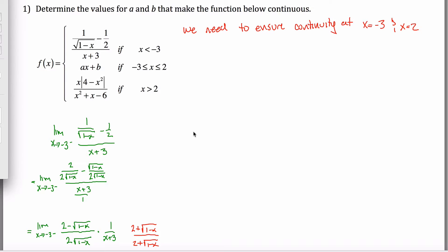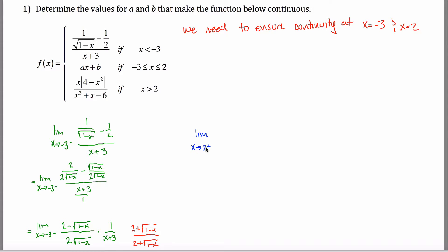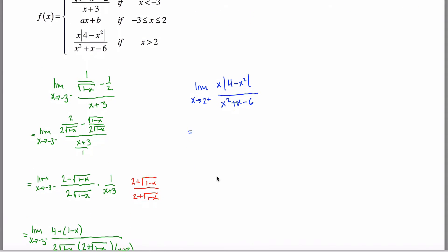Next I'll figure out the limit as x approaches 2 from the positive side, because I need this to equal the limit from the negative side of the middle piece. When x is slightly bigger than 2, I use the middle rule. I want the limit as x approaches 2 of x·|4 − x²| divided by (x² + x − 6). Plugging in 2 gives 0/0, so we'll attack this algebraically.